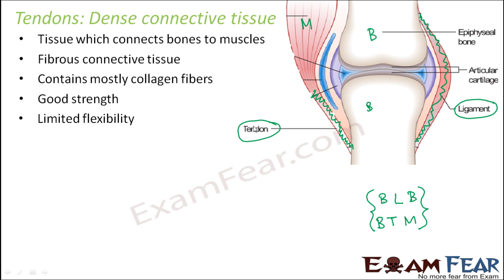You might ask why we need to connect bone to bone or bone to muscle. Bone to bone connection is needed because the framework of the entire body is not made up of one single bone — so bones need to be connected to each other. Bones need to connect to muscles because muscles are the ones which actually cause movements. The contraction and expansion of muscle fibers causes movement, so bones need to be in coordination with muscles for movements to take place.